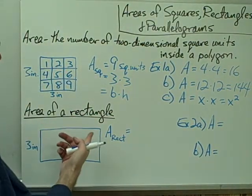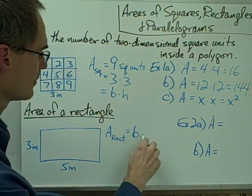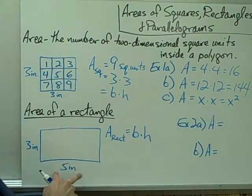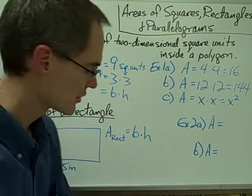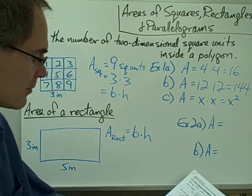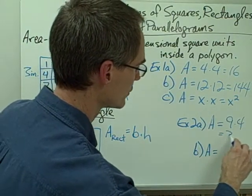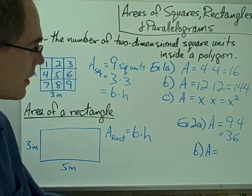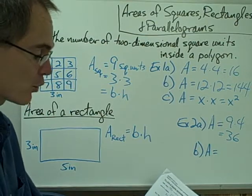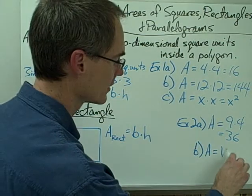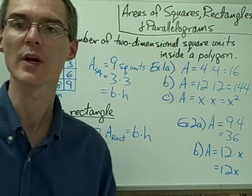The area of a rectangle is very similar to that of a square. The area of a rectangle is, again, the base times the height, although in the case of a rectangle, the base and the height are generally not the same number. Example 2A: the base is nine, the height is four, so our area would be nine times four, which would be thirty-six square units. And example 2B: our base is twelve and our height is x, so our area is just going to be twelve times x, or twelve x square units.